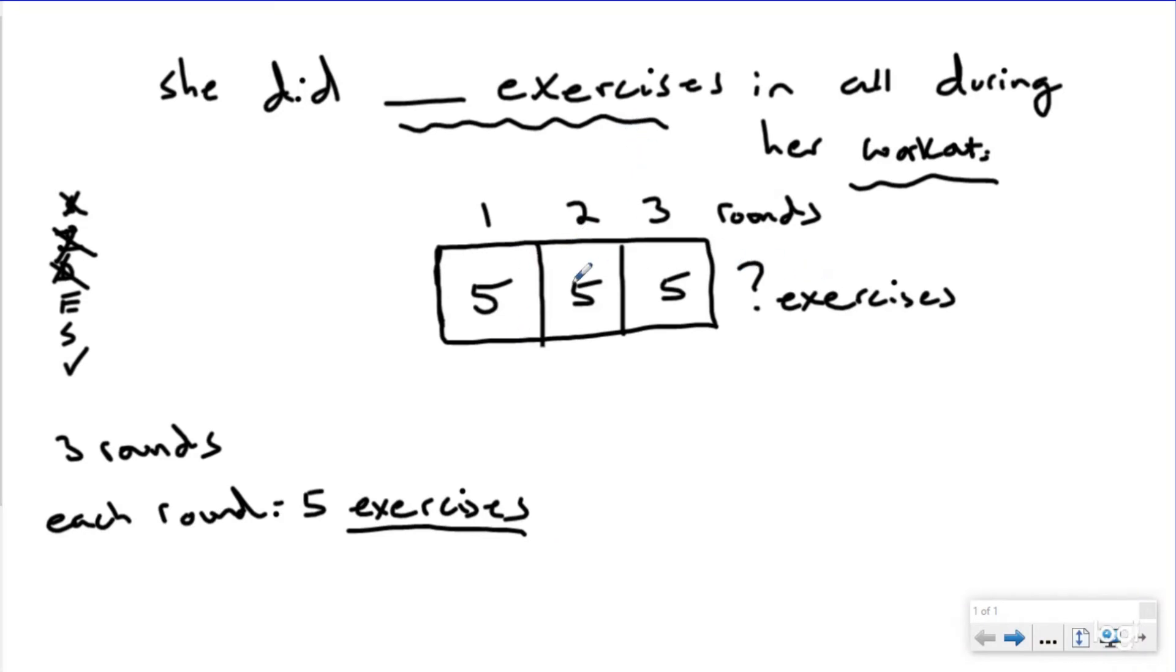So to solve this, we're just doing five plus five plus five. So there's a couple different equations you could solve this with. You could do five plus five plus five. And obviously that would be 15. So we know our answer is 15.